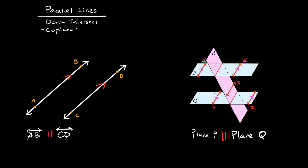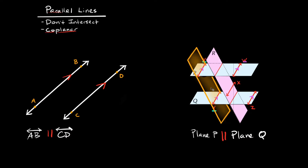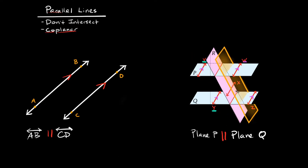Is line V parallel to line Y? Even though they appear to be on different planes, we can actually draw a plane that contains both lines. Since there is a way to place both V and Y on the same plane, we say they are parallel. The same reasoning applies to lines W and Z — there exists a plane that contains them both.